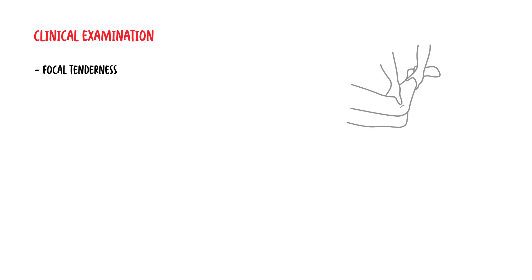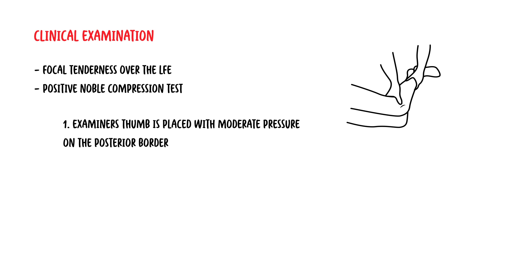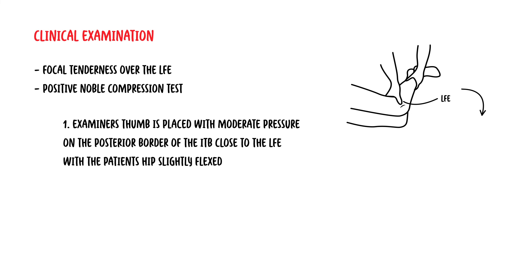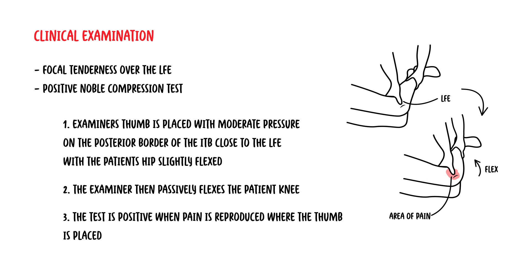On examination, there is focal tenderness at the distal iliotibial band where it courses over the lateral femoral epicondyle. You also get what's called a positive Noble compression test. To perform this test, the examiner's thumb is placed with moderate pressure on the posterior border of the iliotibial band close to the lateral femoral epicondyle, with the patient's hip slightly flexed. The examiner then passively flexes the patient's knee. The test is positive when pain is reproduced where the thumb is placed, and is more pronounced at approximately 30 degrees.